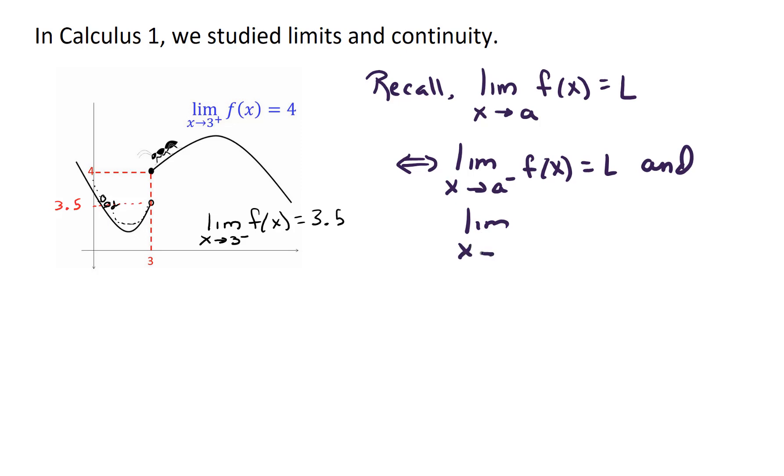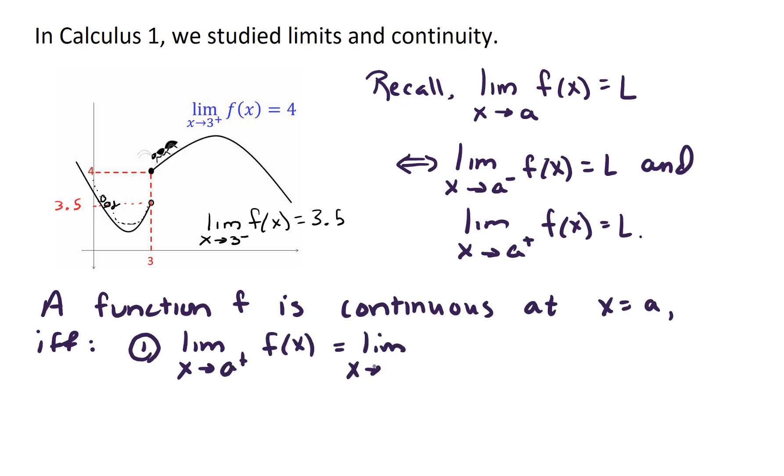And then we had some more ideas that we developed in Calc 1 about continuity. And so we said basically a function f is continuous at some point x equals a if and only if the following three conditions hold. First of all, the left-hand limit and the right-hand limit both exist and are equal to each other. Second of all, the function is defined. And third of all, not only is the function defined and the two-sided limit exists, but the value of the function must equal the limit as x approaches a.